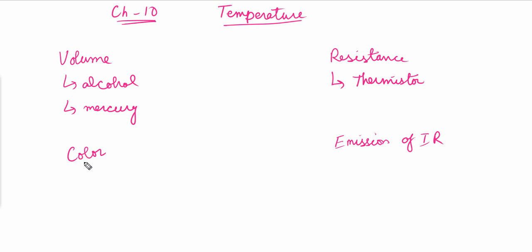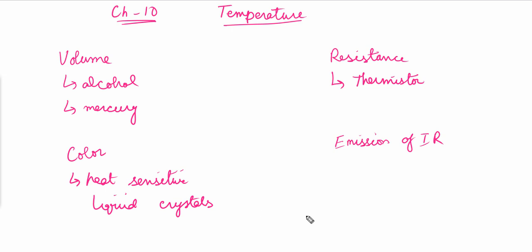The third thing to discuss is color. There are some heat-sensitive liquid crystals whose color changes with an increase or decrease in temperature. Next is the emission of infrared radiation: when temperature increases, the emission of infrared radiation from any given source increases. The more we increase the temperature, the more IR emission we observe. For example, if you increase the flame of a stove, the infrared radiation increases.